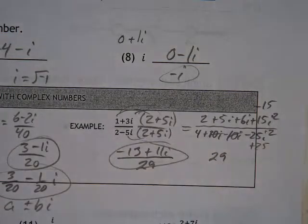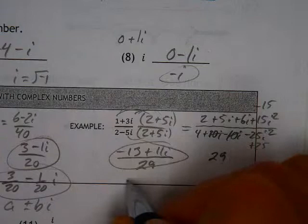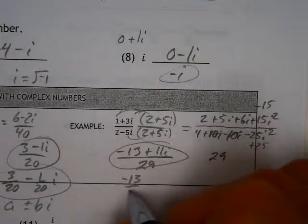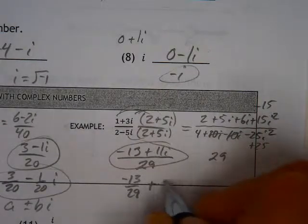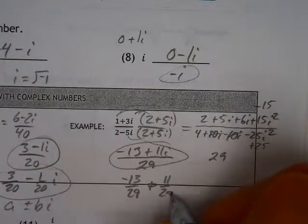That then is the simplified form. And again, if you took it another step, negative 13 over 29 plus 11 over 29i.